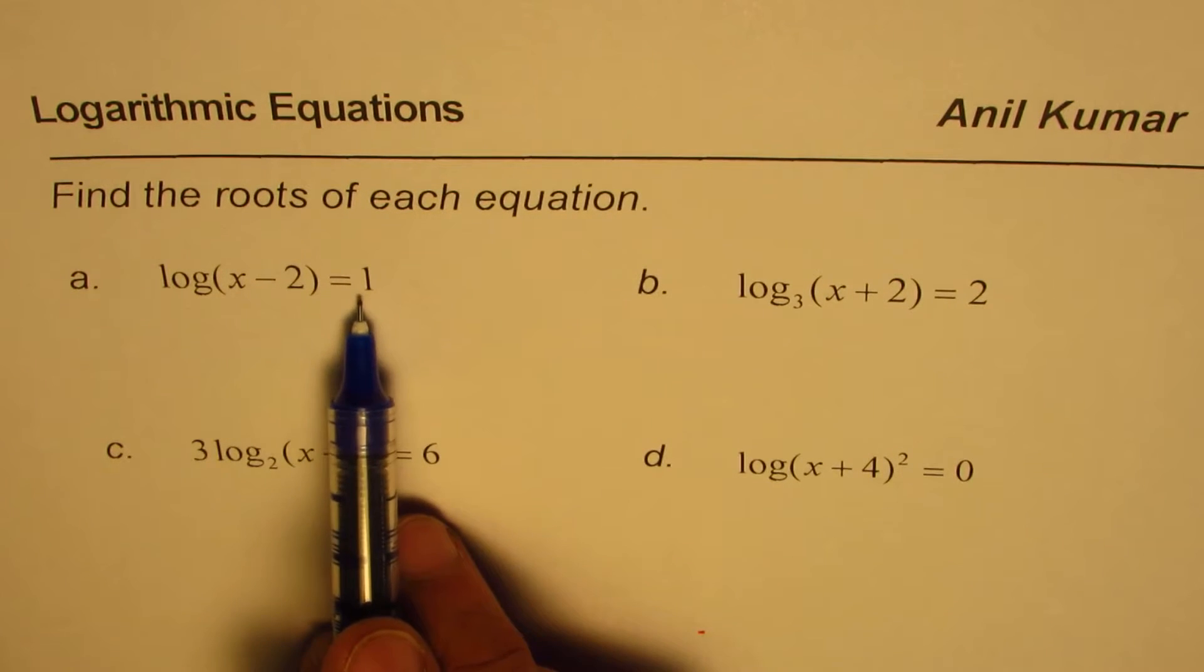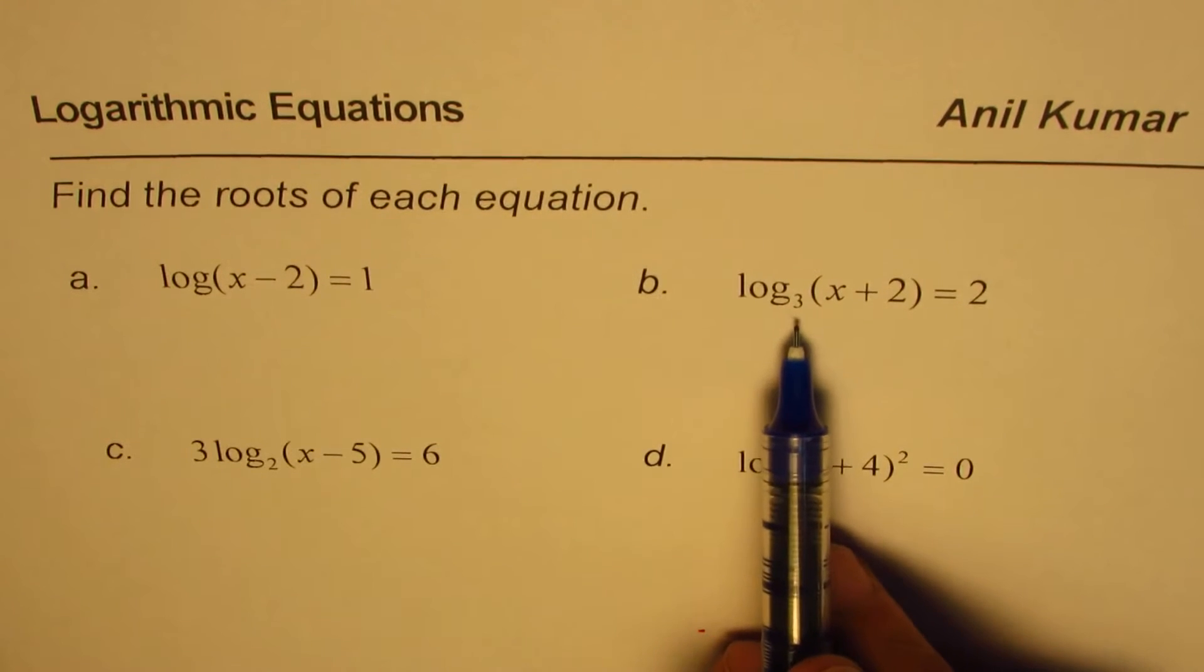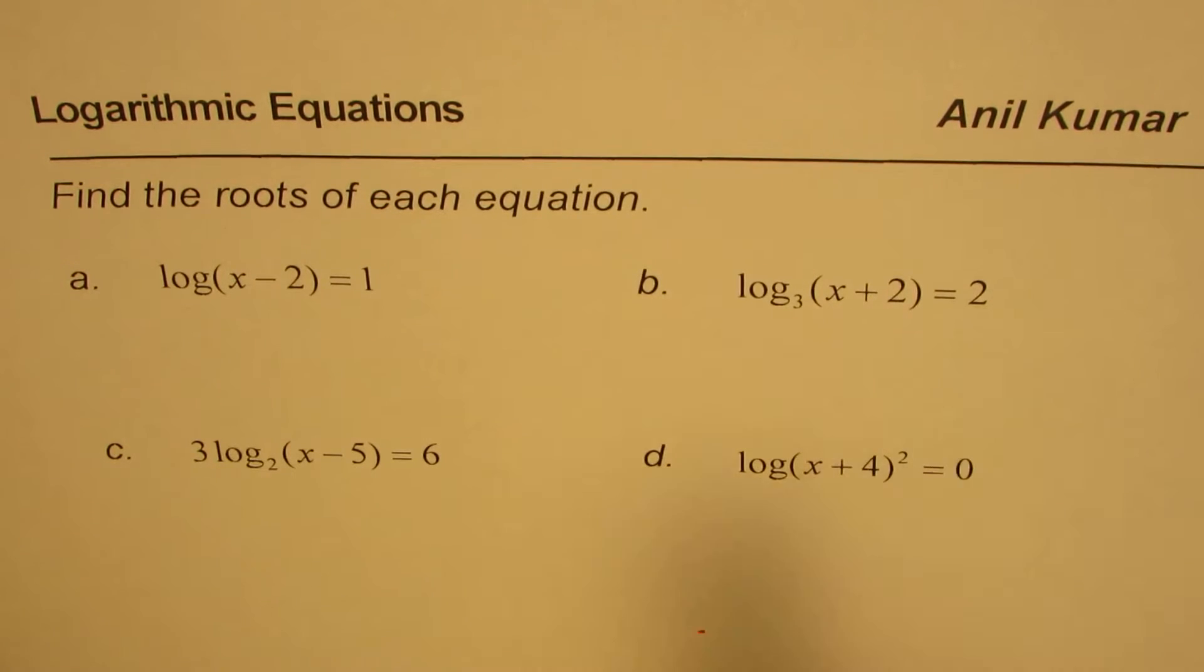Log of x minus 2 equals 1, log to the base 3 of x plus 2 equals 2, 3 times log to the base 2 of x minus 5 equals 6, and log of x plus 4 whole square equals 0.